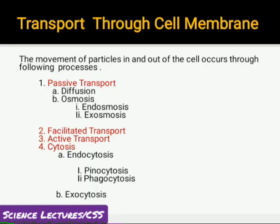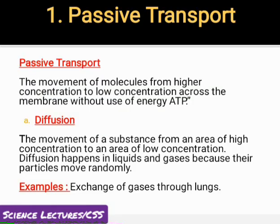Four different kinds of transport processes take place through the plasma membrane: number 1 passive transport, number 2 facilitated transport, number 3 active transport, number 4 cytosis. Passive transport is the movement of molecules from a region of high concentration to low concentration but without the use of energy.